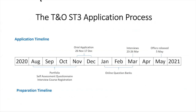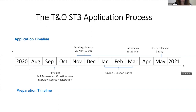My name's Zara, thank you for the introduction. I'm going to talk mainly about the self-assessment questionnaire. To start off, I'll give you an idea of what the last application cycle looked like, including a quick overview of the dates. The Oriel application went live on their website between November and December last year, interviews happened in March, and offers were released in May. These dates can change but are likely to stay the same. In terms of my own preparation, I started preparing my portfolio and filling out the self-assessment questionnaire quite early on, to leave time later to focus on the interview.